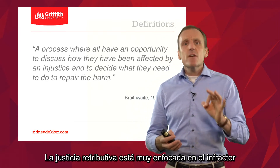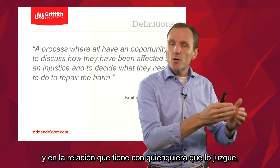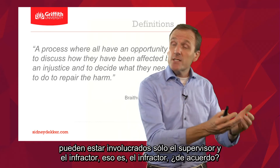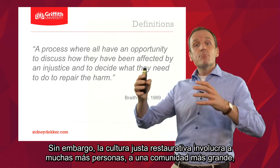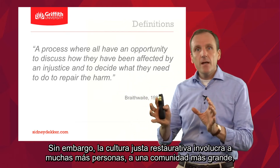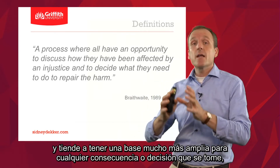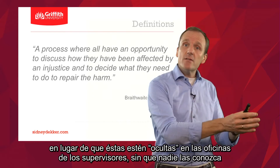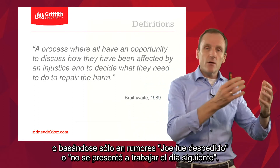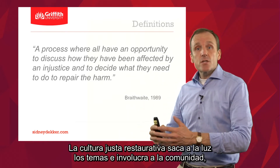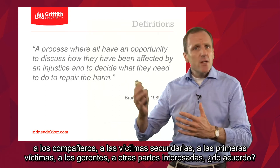Where retributive justice is very much focused on the offender — the offender in a relationship to whoever judges him or her — it may just involve the supervisor and the offender. Whereas restorative just culture involves many more people, a larger community, which tends to have a much broader base for any consequences or decisions taken. Rather than being hidden away in the supervisor's office, restorative just culture puts it out in the open and involves the community: the colleagues, the second victims, the first victims, the managers, and other stakeholders.